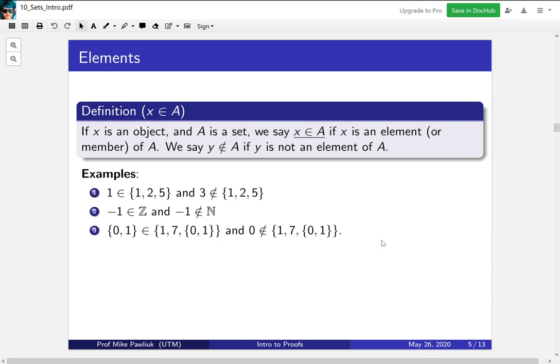And then the most confusingly, the set {0, 1} is an element of this set. It's this third thing right here. However, the thing that will maybe confuse some of you is that 0 is not an element of this thing. How could it be?